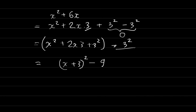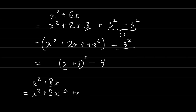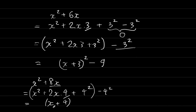Another example: x² + 8x. We rewrite as x² + 2·x·b, and the number multiplied by 2x to give 8x is 4, so b = 4. The last term is 4² = 16. We add 4² and subtract 4², and the first three terms combine into (x+4)², giving (x+4)² - 16.